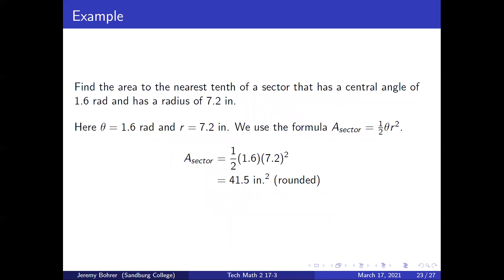Find the area to the nearest tenth of a sector that has a central angle of 1.6 radians and a radius of 7.2 inches. Here theta equals 1.6 radians and r equals 7.2 inches. We use the formula: area of the sector equals one half theta r squared. The area of the sector is equal to one half times 1.6 times 7.2 squared, which is equal to 41.5 square inches when rounded.